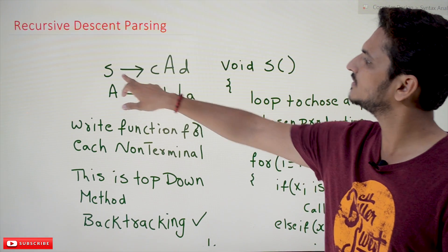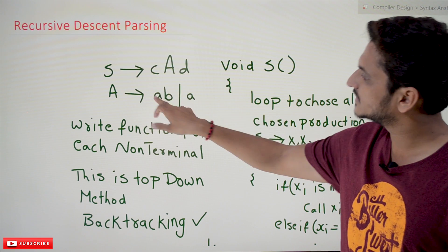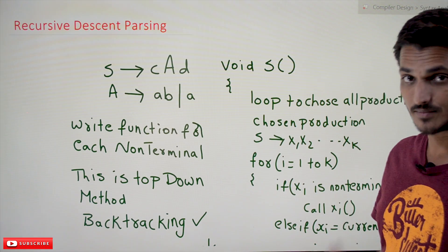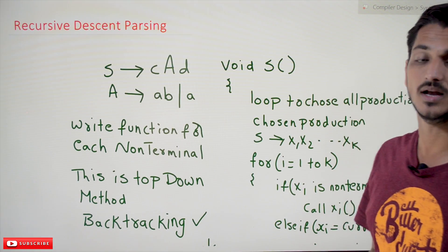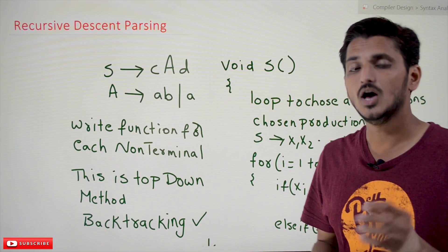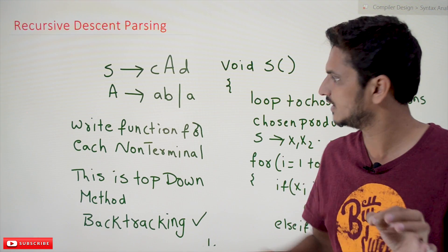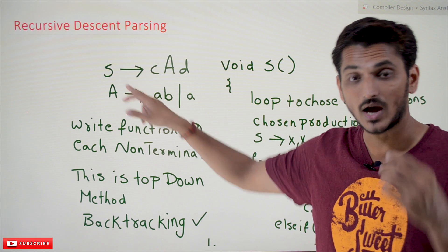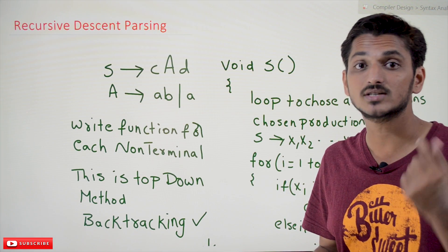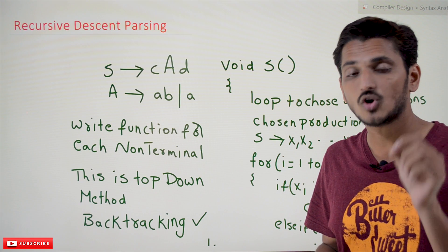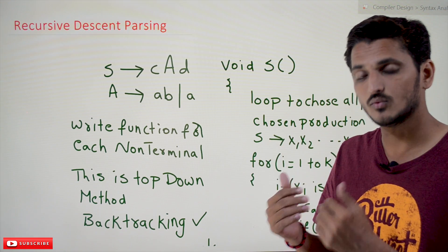Let's take an example grammar: S tends to c A d, A tends to a b or b. Here A and S are non-terminals. In recursive descent parsing we write functions for each non-terminal. S is a non-terminal, so we write a function for S. A is a non-terminal, so we write a function for A.